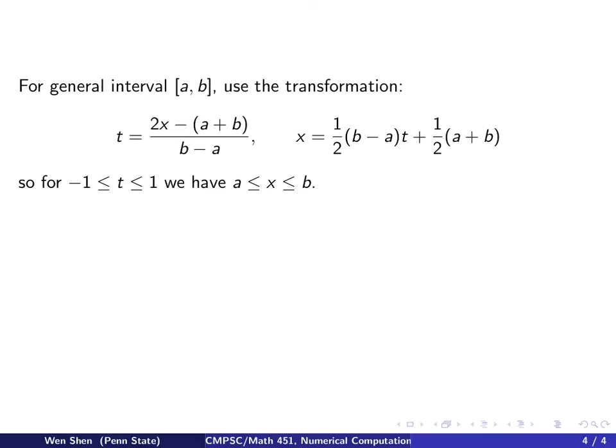What you can do is just a linear transformation. You rescale it, and then you shift it. So the transformation is the following: t equals 2x minus (a+b) over b minus a, which you could solve for x and write x in terms of t, and this is what you would get.